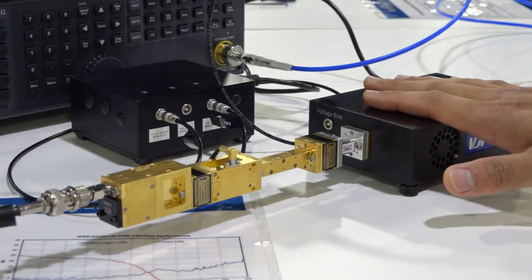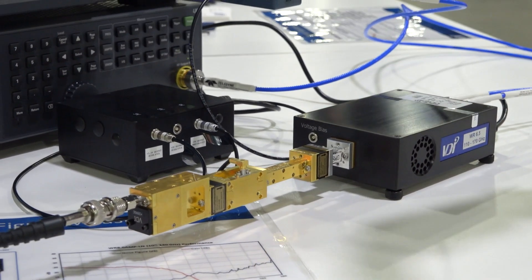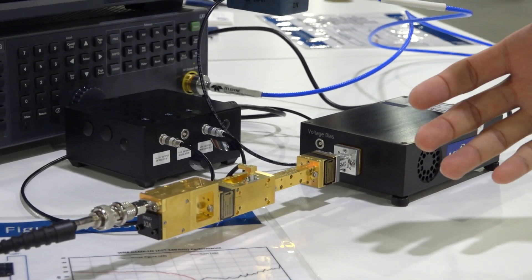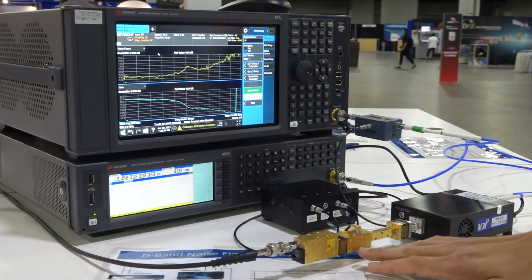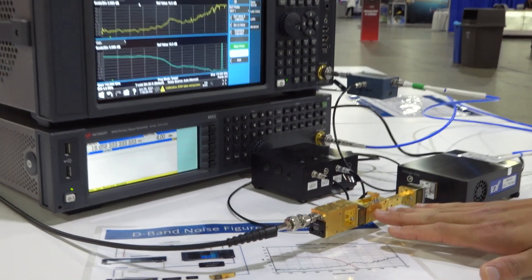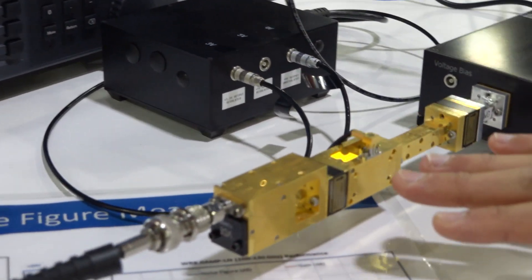We run an onboard calibration, and then once the calibration is finished, we place the DUT, which in this case is an LNA low noise amplifier operating around 90 to 140 gigahertz.